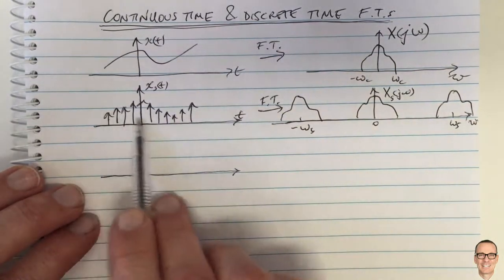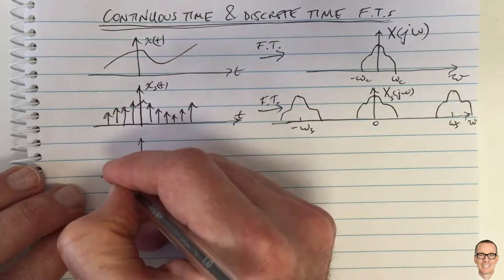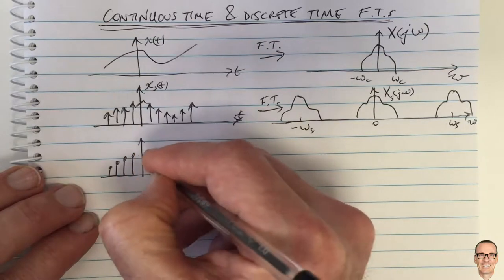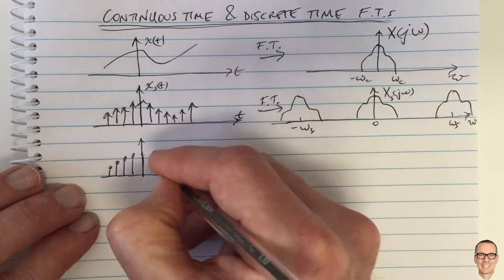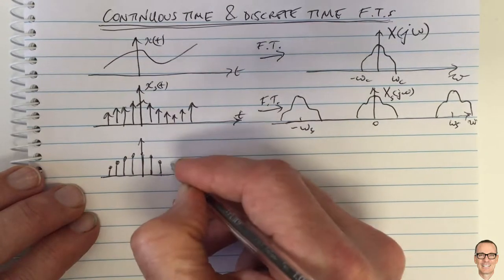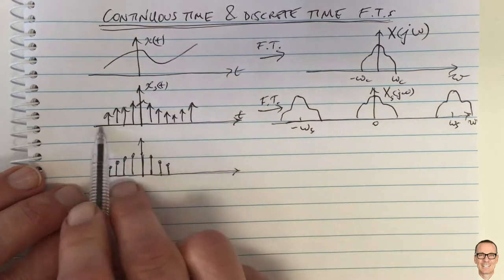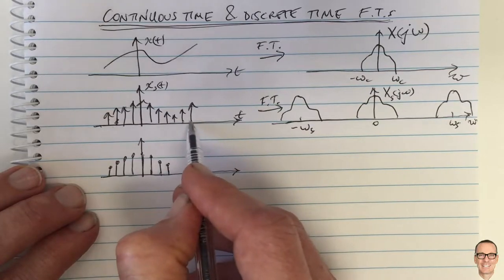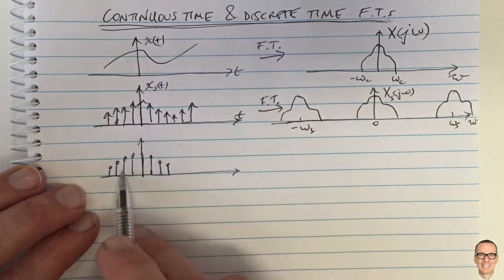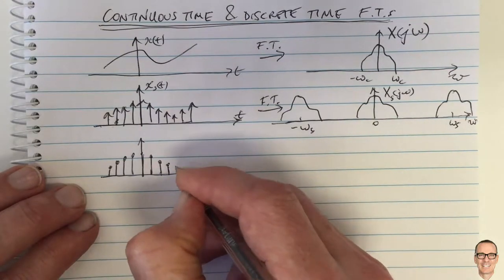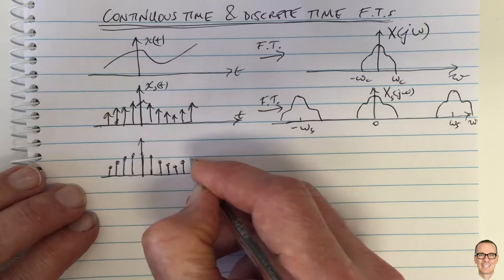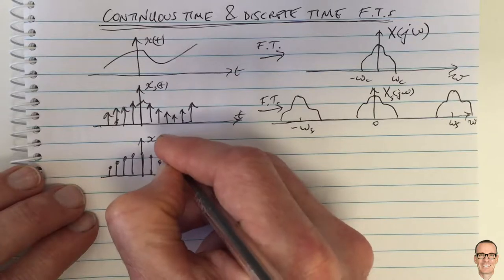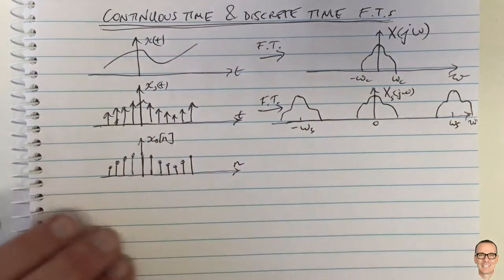A discrete time signal: if we took the sampled signal and simply kept the values at the times when the samples happened, that gives us our discrete time signal. A discrete time signal is plotted — it doesn't exist between the samples, it only has values at those points. In continuous time, the delta functions do exist between the deltas, they just equal zero there. Whereas in discrete time, the signal is defined only at integer values. So this discrete time signal is written as x_s[n], where n is an integer.